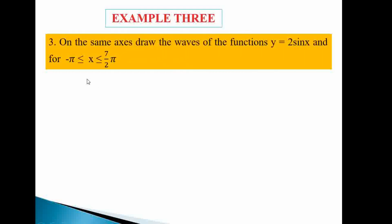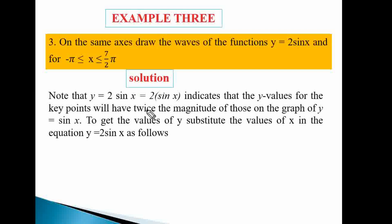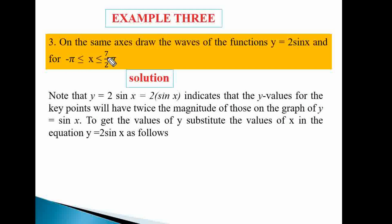Example three: Trigonometric graphs. On the same axis, draw the wave functions of y = sin x and y = 2 sin x for negative π ≤ x ≤ 7π/2. Note that π means 180 degrees, so the range in degrees is from negative 180° to 7/2 × 180°.